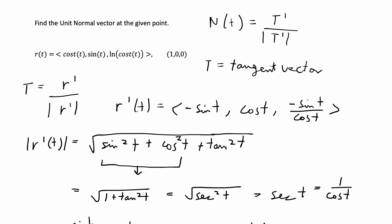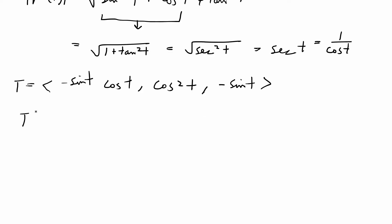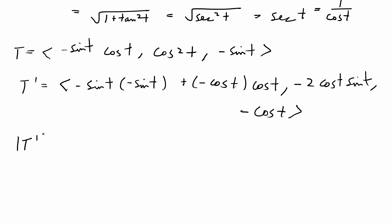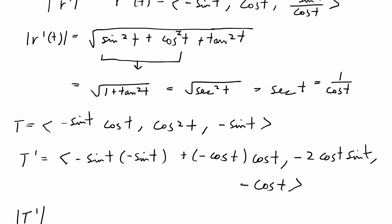Now that I know the three components of T, I need to find T' and the magnitude of T' to solve for N(t). Taking the derivative of each component: for the first component, -sin(t)cos(t) by the product rule gives -sin(t)(-sin(t)) + (-cos(t))(cos(t)), i.e., sin²t - cos²t. The second component gives -2cos(t)sin(t), and the third component gives -cos(t).